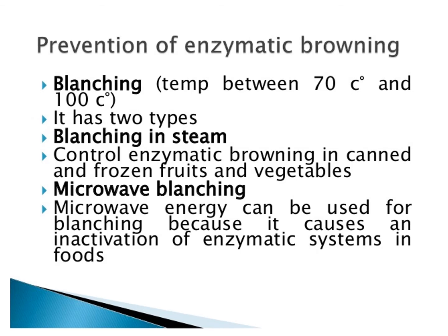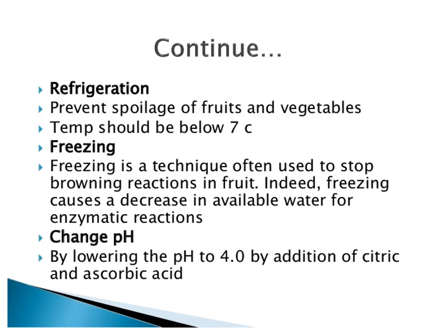Enzymatic browning can be prevented by blanching at temperatures between 70 and 100 degrees Celsius. There are two types: blanching in steam and microwave blanching. Refrigeration also helps prevent the spoilage of fruits and vegetables.